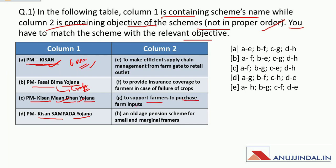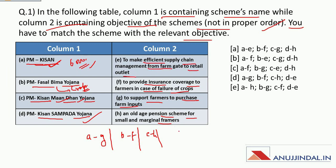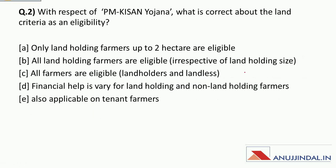Matching column one with column two: PM Kisan (A) matches with support to purchase farm inputs (G). PM Fasal Bima Yojana (B) matches with insurance coverage in case of crop failure (F). PM Kisan Maandhan Yojana (C) matches with old age pension for small and marginal farmers (H). PM Kisan Sampada Yojana (D) matches with efficient supply chain management from farm gate to retail outlet (E). Therefore the correct answer is option D: A-G, B-F, C-H, D-E.